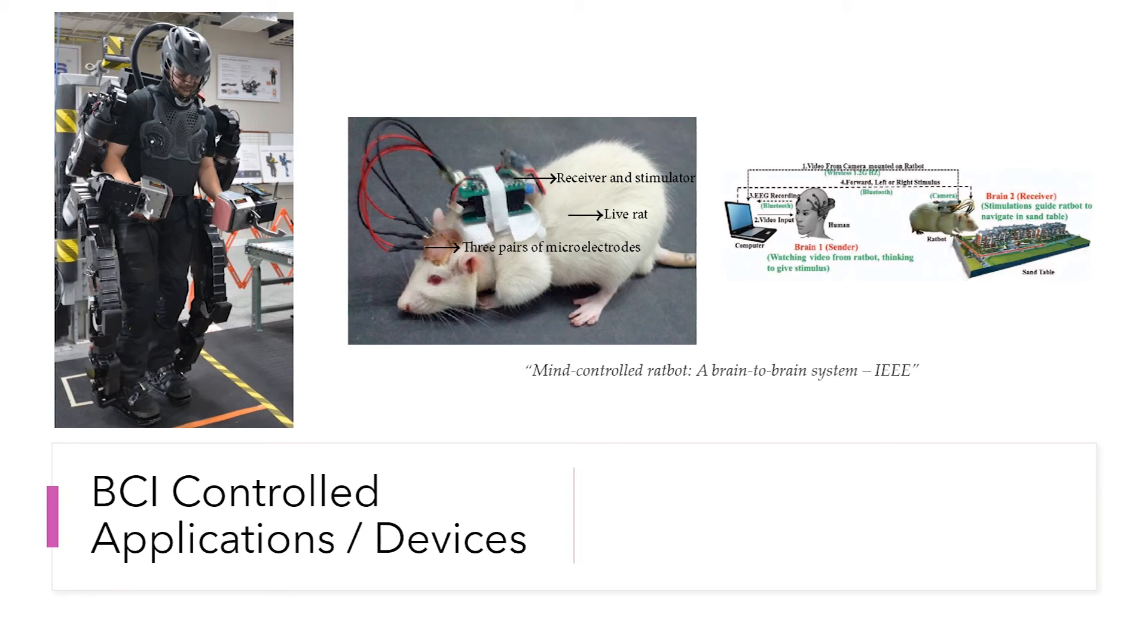Talking about Mind Control Ratbot, a brain-to-brain system research. This Ratbot equipped with a micro camera mounted on its back was placed in a sand table to execute search missions. A person wearing a wireless EEG headset watches videos of the experiment from the camera live stream. When the person thinks where the rat needs to go, the brain signals are transmitted wirelessly to a computer and it decodes the brain signals and converts them to stimulate the brain of the ratbot to turn left, turn right, or to go forward. Similar to this, there are plenty of BCI controlled research.